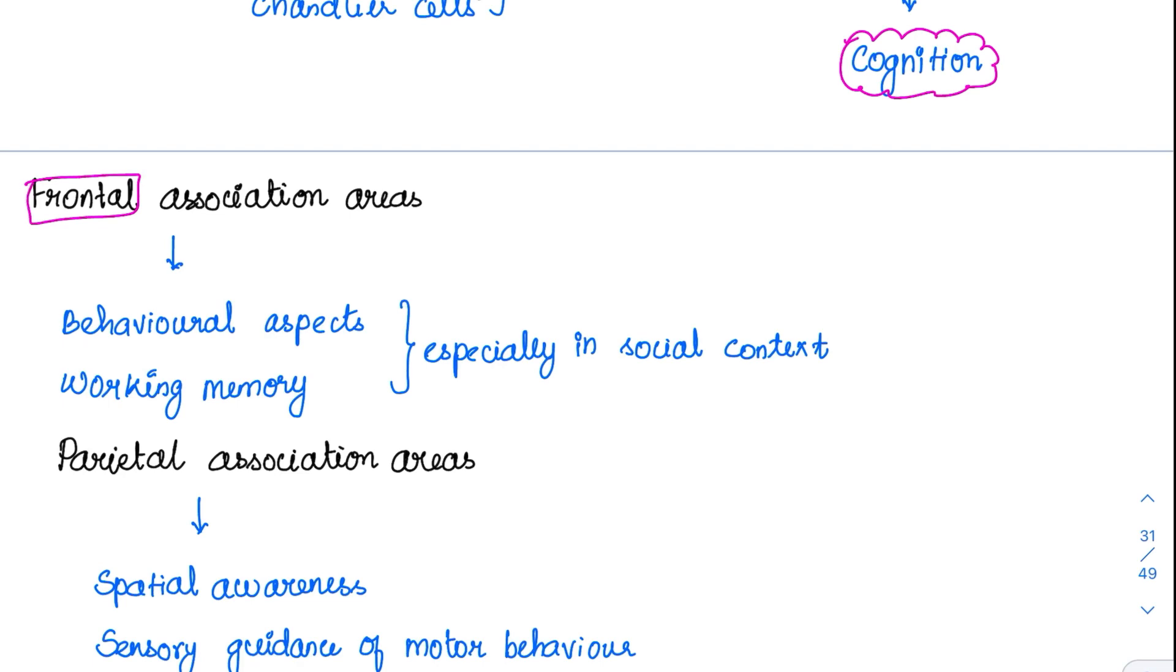The frontal association area is very much involved in the behavioral aspects. Suppose you are at home and you are partying, you will be wearing your dresses, whatever you like, like you'll be wearing shorts and a tee. But whenever you go in for a wedding or something, you will dress up nicely. So the same person's behavior is changing according to the social context. That is why frontal lobe is one of the most developed lobes in the human brain compared with lower animals, and it is involved in the behavioral aspect.